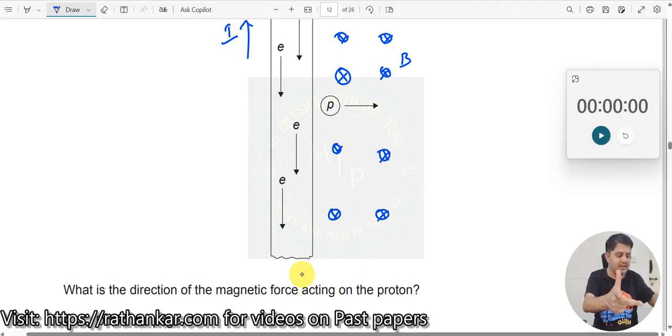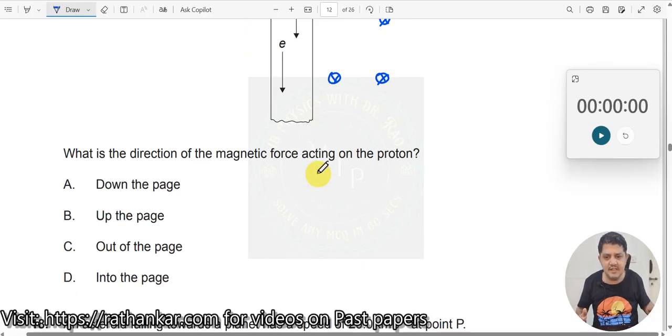What is the force? Force is upwards. So therefore, these protons will now get deviated upward like this. So which is the right answer here? Up the page, B is the right answer.